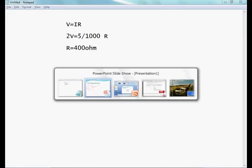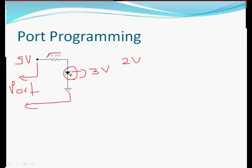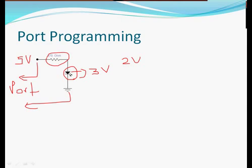So we need to use a 400 ohm resistor for every LED that we are going to use in our 8-pin parallel port programming. That is all you need to know about the components, and I will show you the circuit diagram that we are going to use.